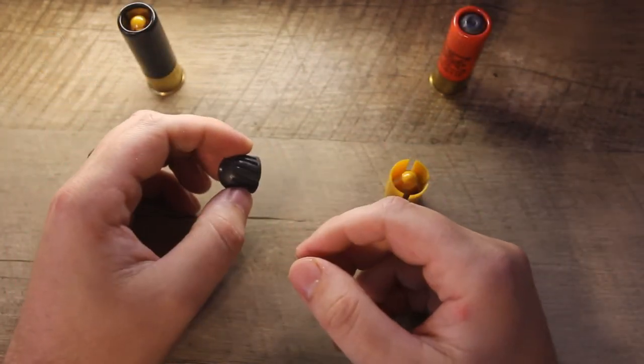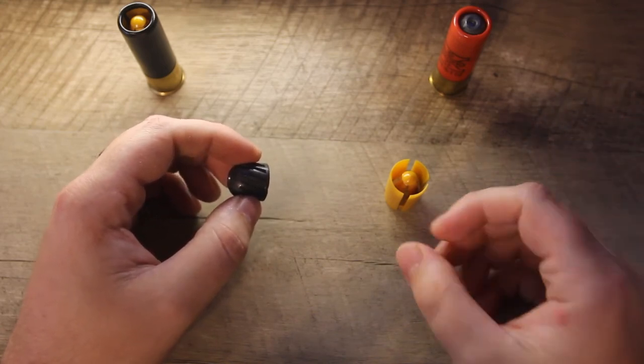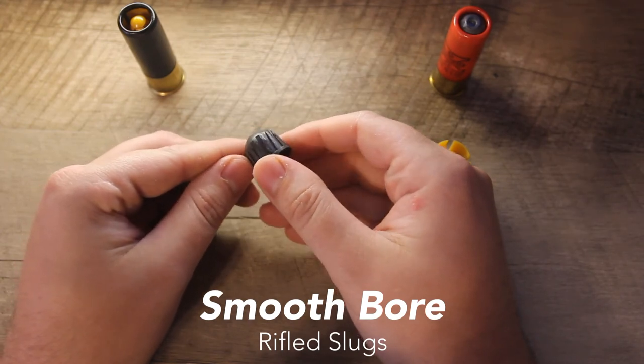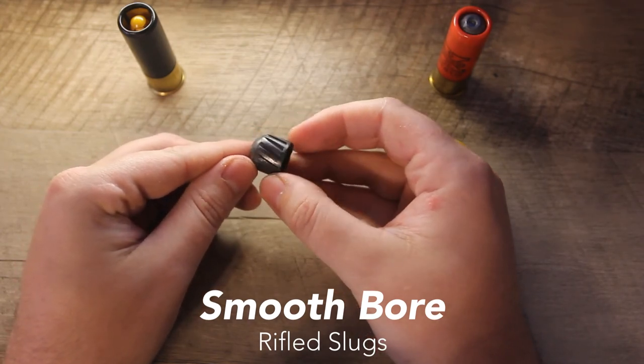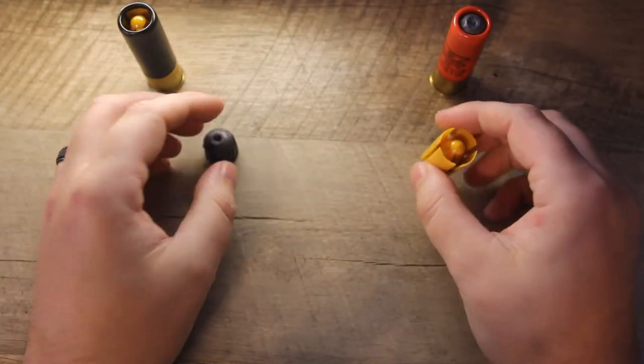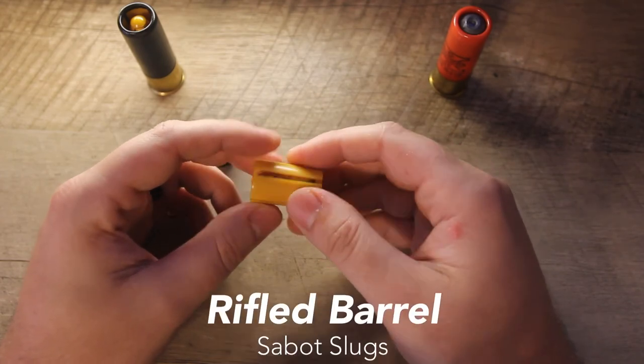So the easiest way to summarize this is: if you have a shotgun that has essentially a smooth bore, there's no rifling inside of that barrel, you want to focus on a slug that has rifling built into that slug, so you will use a rifled slug. If you have a barrel that does have rifling, you want to try one of these sabot rounds. These are designed for those barrels with rifling.